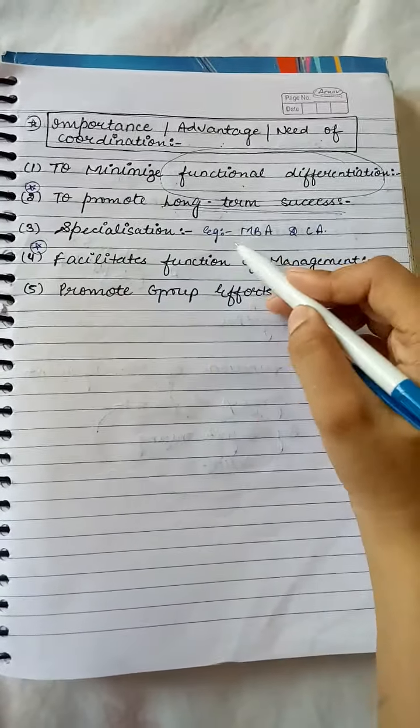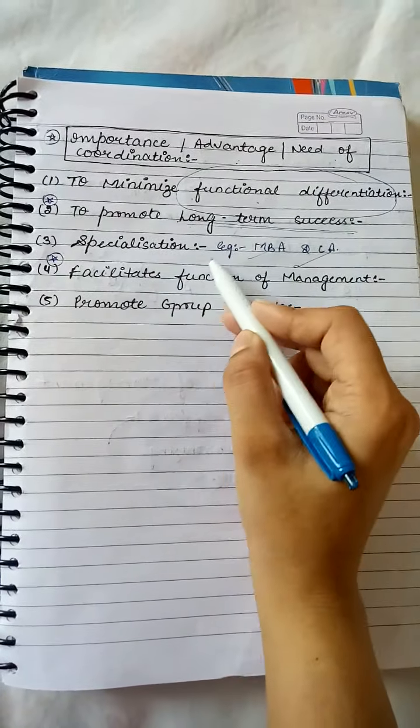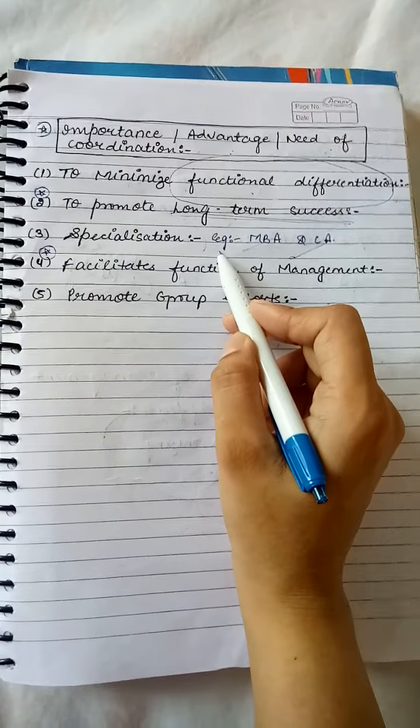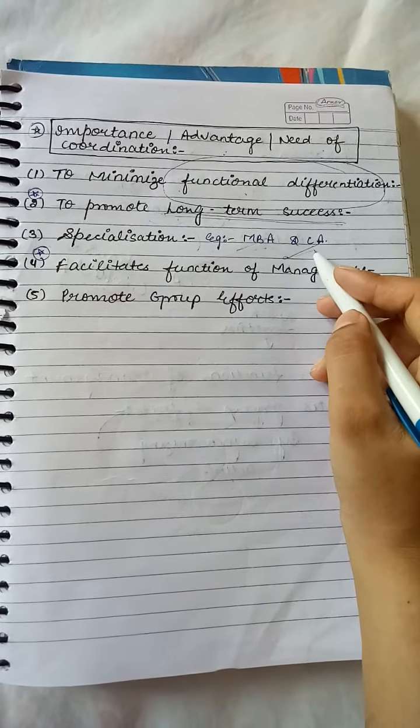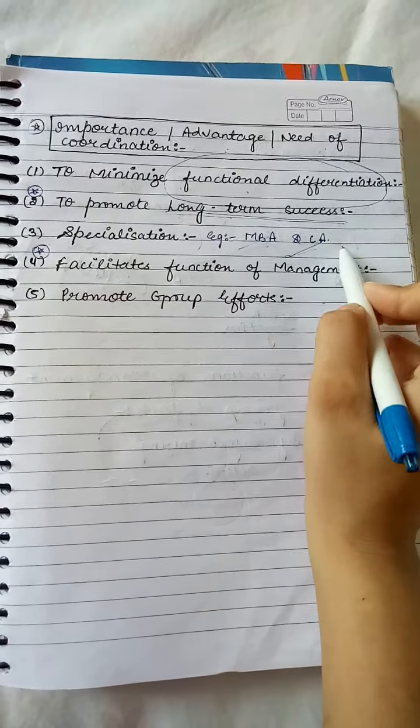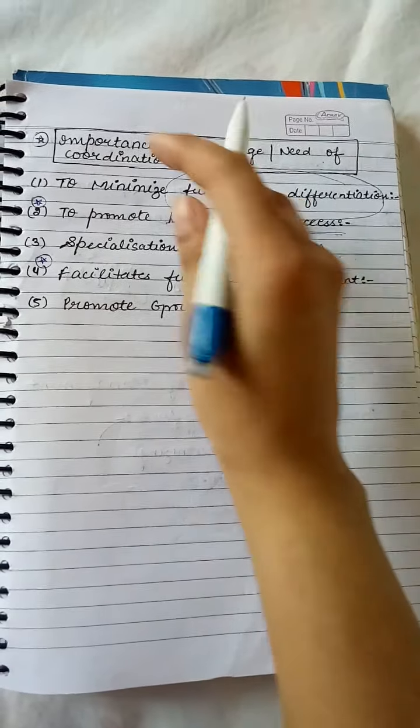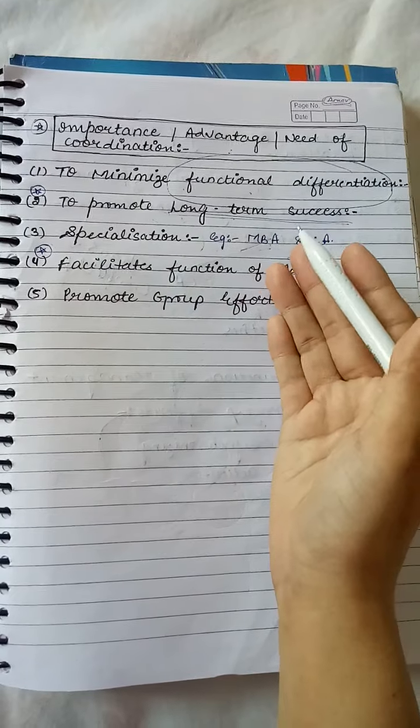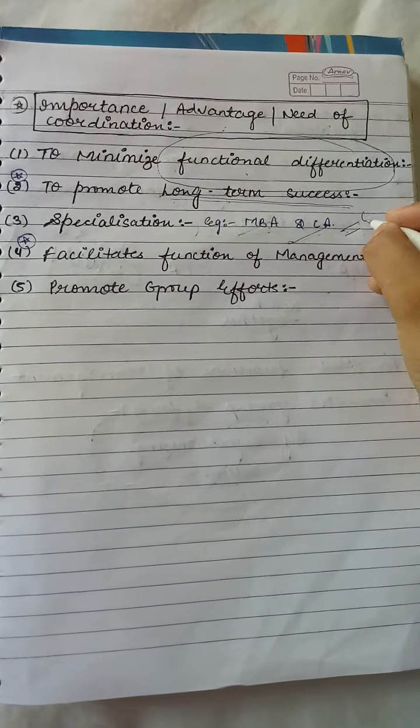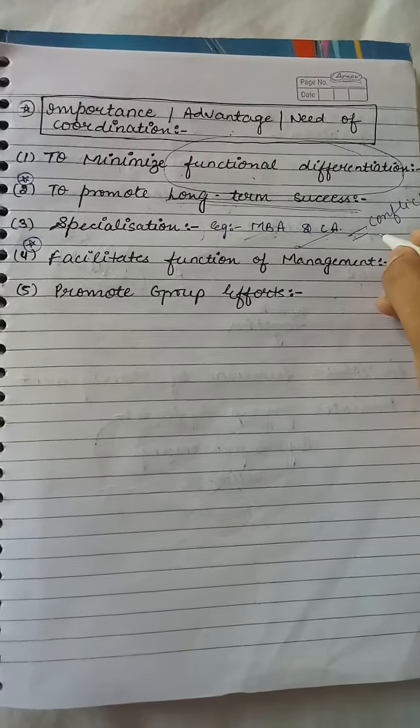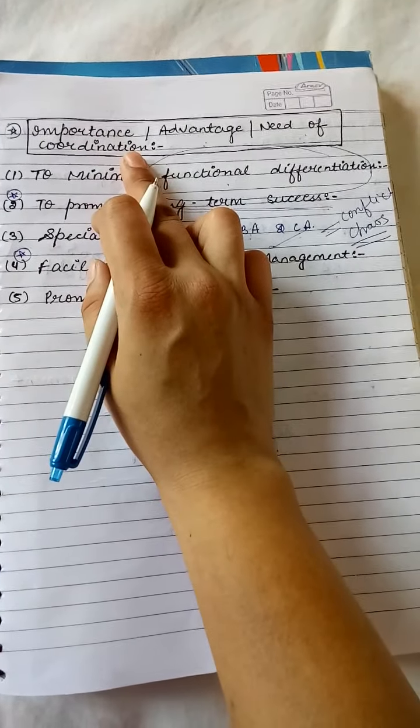Specialization. I've written an example of MBA and CA. In an organization there will be an MBA and a CA, representing specialization. A person, a department which is specialized in a particular sector. The MBA person will take a decision. He will think he is 200% correct. The CA person will take a decision. He will think he is 300% correct. MBA person will say to CA person, how did you challenge my decision? CA person will say how did you challenge my decision? So what does coordination say? Don't fight. Work together. Work together and take decisions together. So ultimately what happens? Whatever conflicts we have, whatever chaos is created, coordination helps to avoid that. This is why coordination is important.